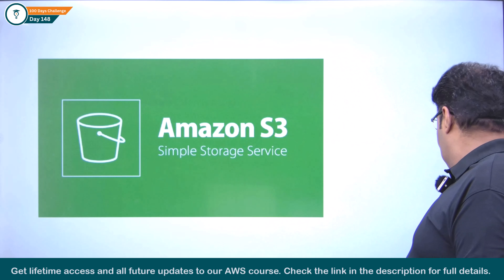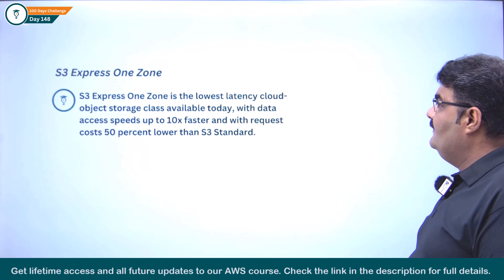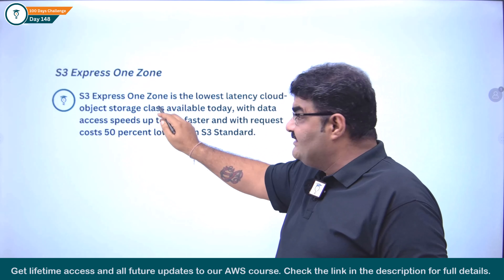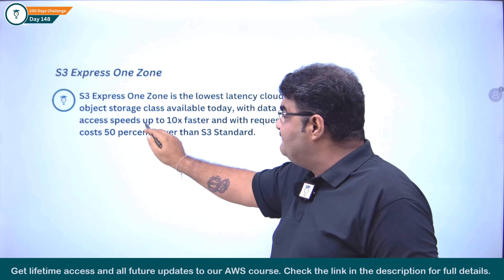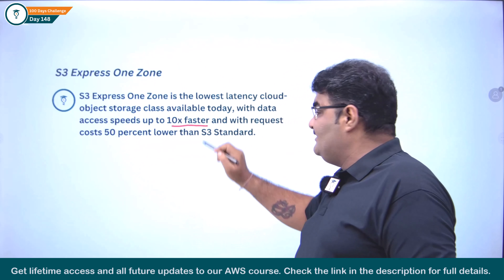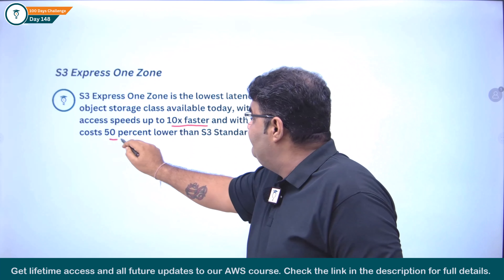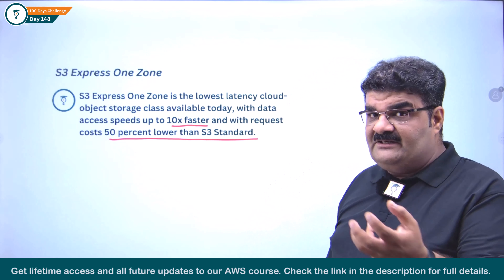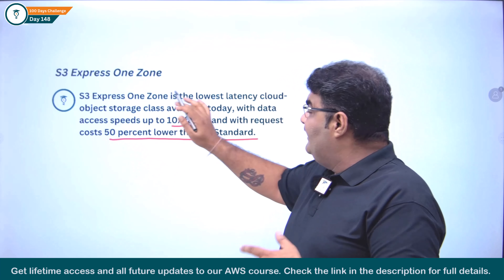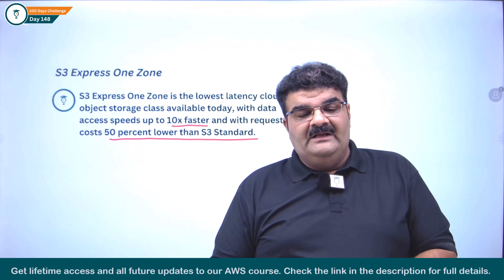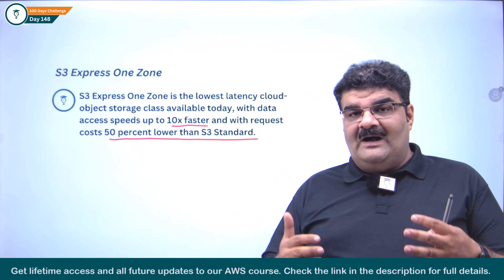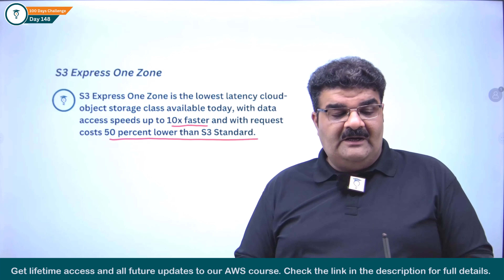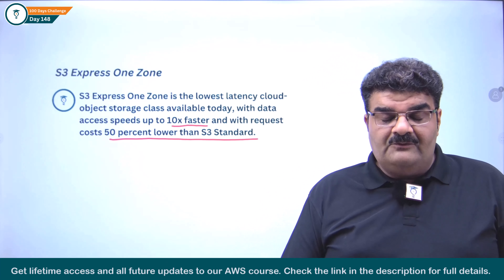S3 Express One Zone is the lowest latency cloud object storage class available today, with data access speed up to 10x faster and with request cost 50% lower than standard. Here you are getting a double benefit — you are paying 50% less for requests and it is 10x faster. The question is why it is so much faster and why we should choose this.